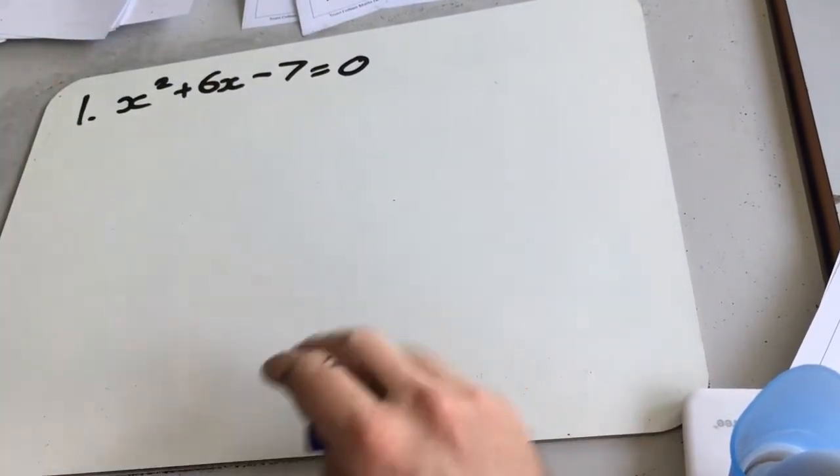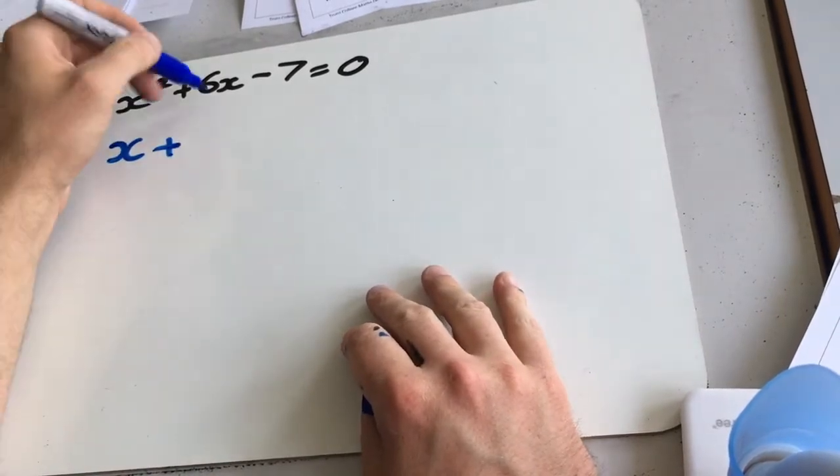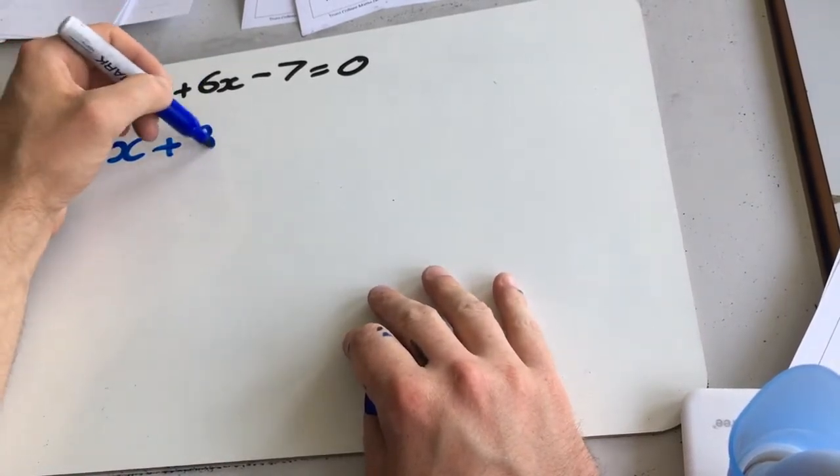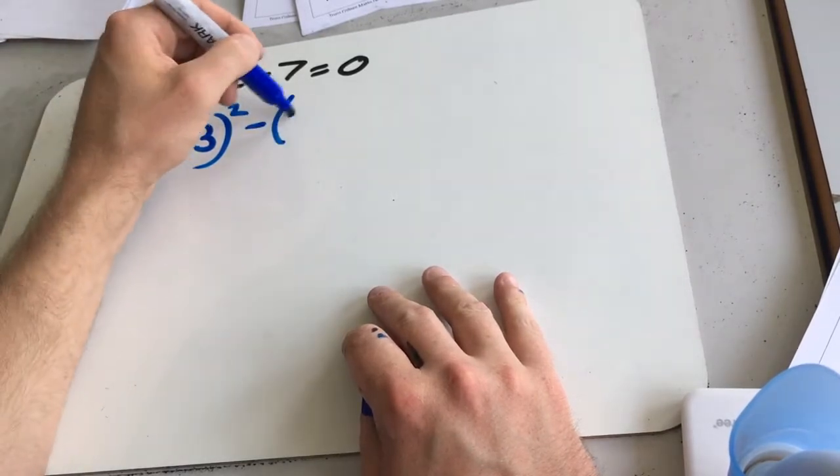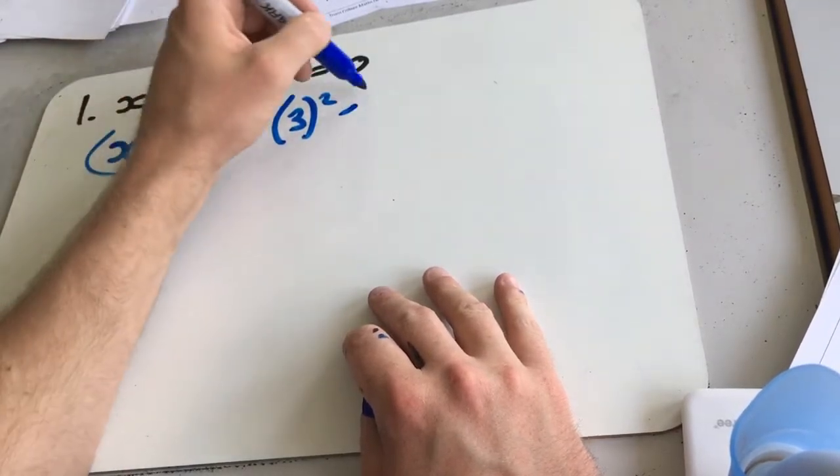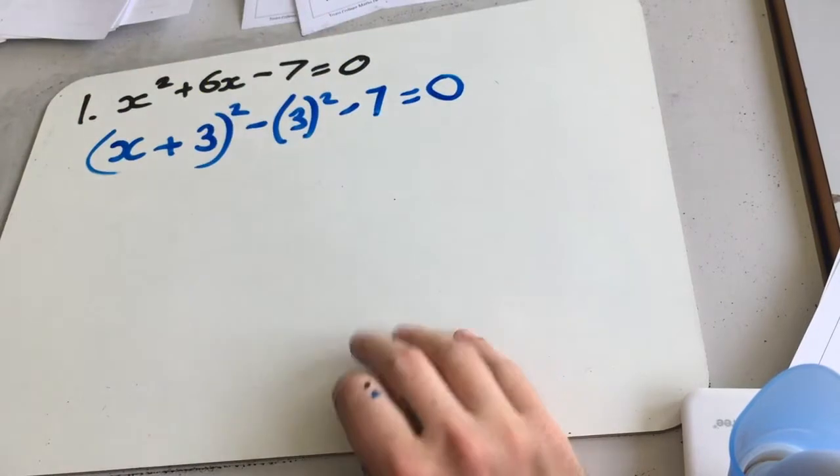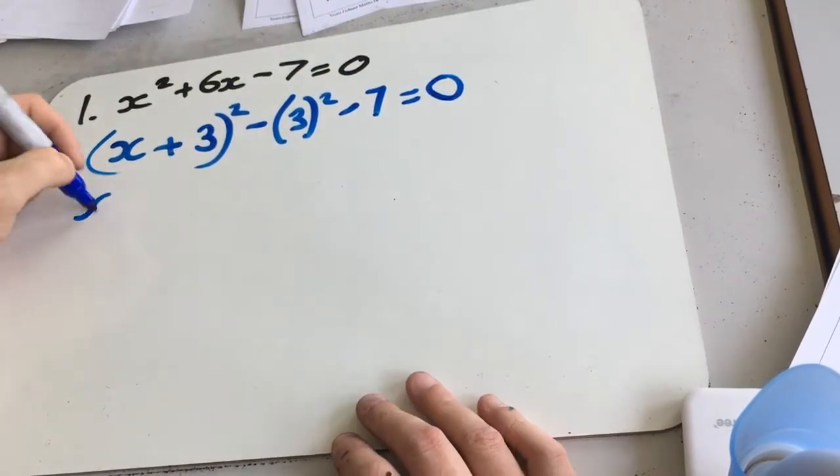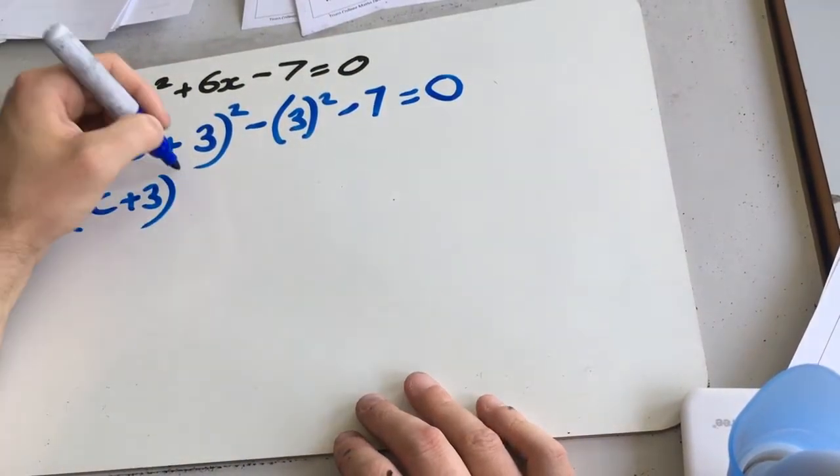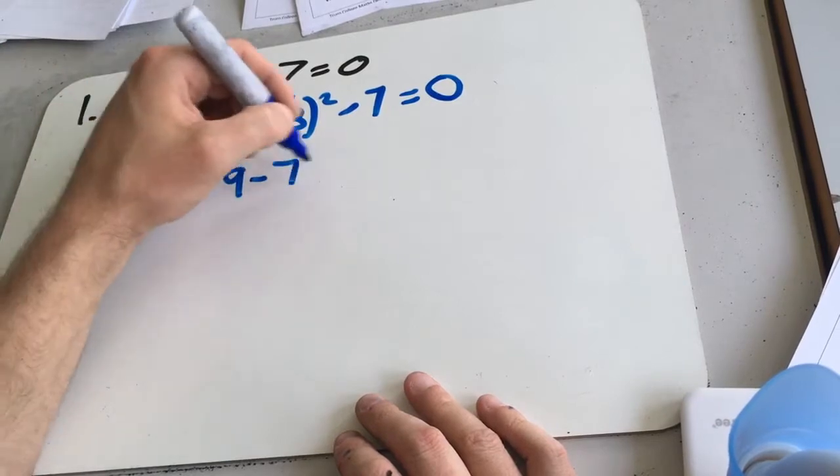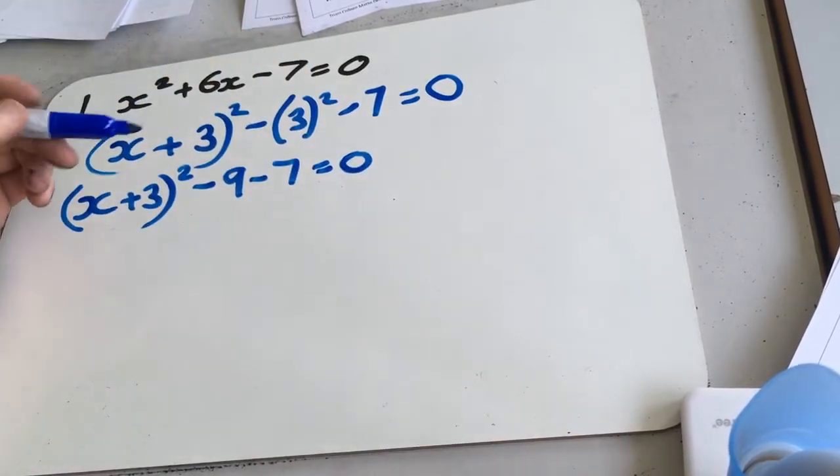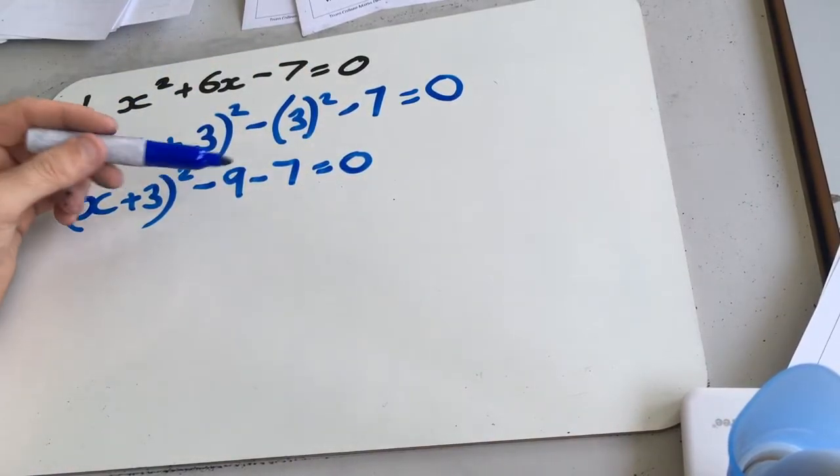Remember, ignore the 7 for now. So you get x plus b over 2 is 6 over 2, which is 3, minus 3 squared minus 7, and we've got to keep it equal 0 there. So x plus 3 squared minus 9 minus 7 equals 0. Minus 9 and minus 7 together are going to give us minus 16.